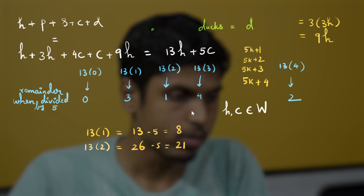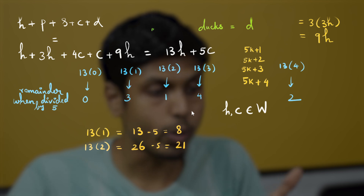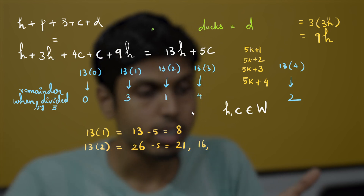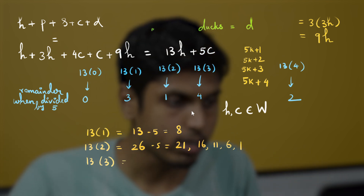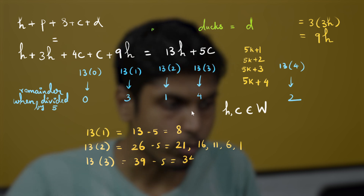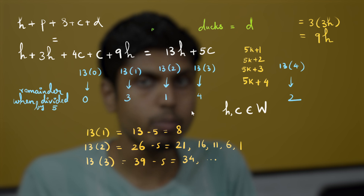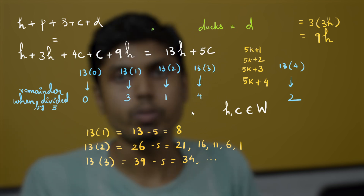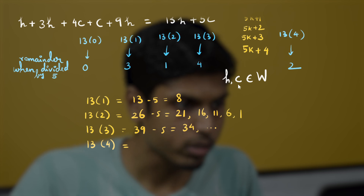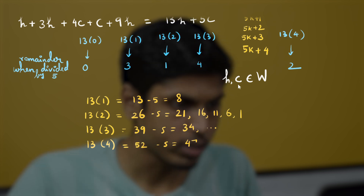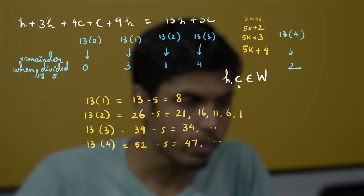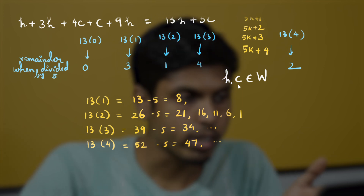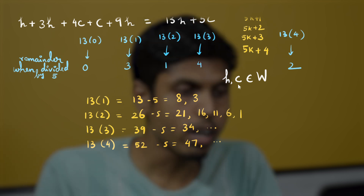Not only 21, but also 21−5 = 16, and 11, 6, 1 — all cannot be represented. For remainder 4: 13×3 = 39, so 39−5 = 34 and all numbers below leaving remainder 4 cannot be represented. For remainder 2: 13×4 = 52, so 52−5 = 47 and all numbers below leaving remainder 2 cannot be represented. Also, from the first row, 8 and 8−5 = 3 are also not representable.